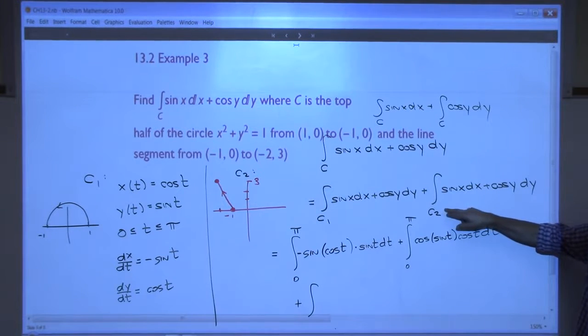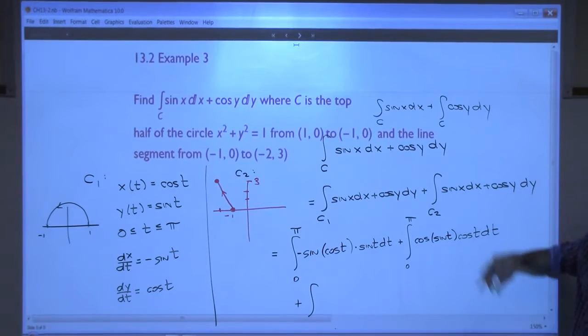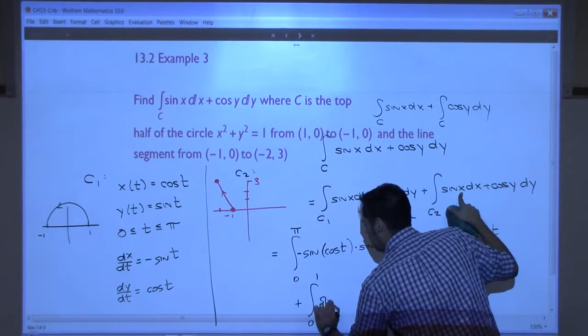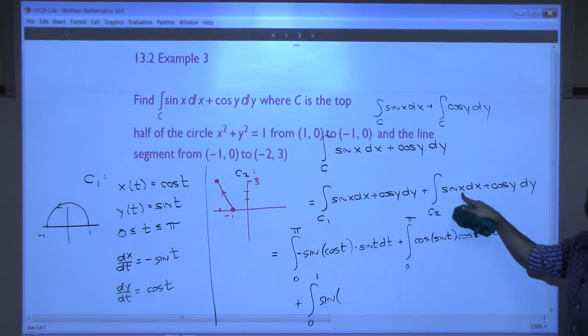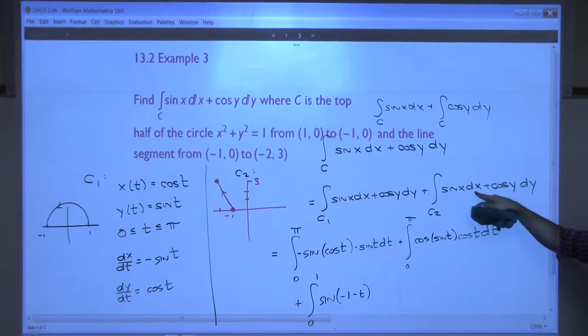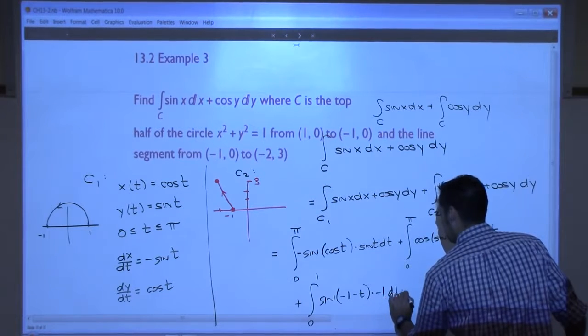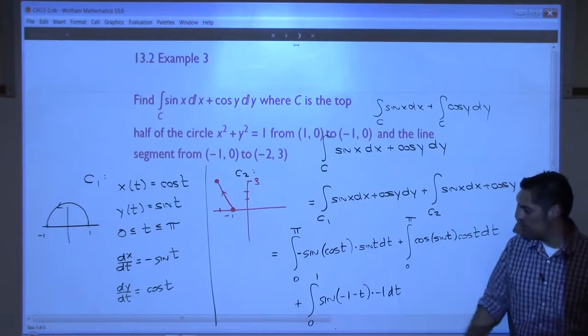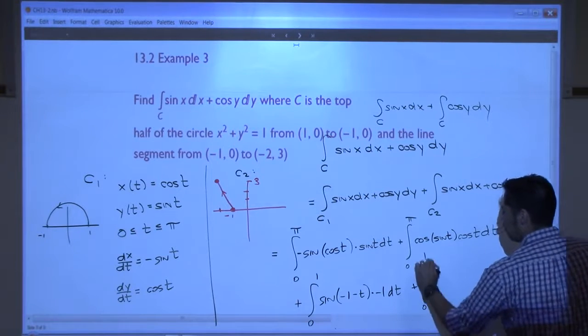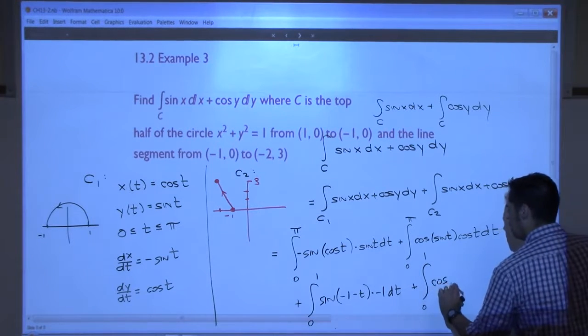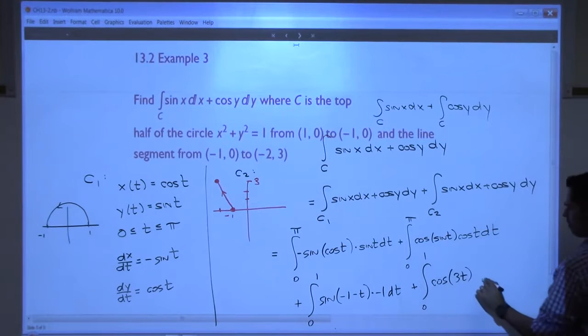Plus, integral. Now, for c2, where am I going from? Zero to one, right? Sine of x. Sine of what was x? Negative one minus t. Dx. What was dx? Just negative one? So, times negative one dt. Plus, integral zero to one again. This time I'm doing cosine y dy. So, cosine of what was y? 3t. And dy was 3. So, 3 dt.